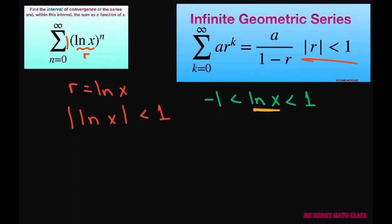So I can power this up as e to the power of negative 1 is less than e to the power of ln of x is less than e to the power of 1.